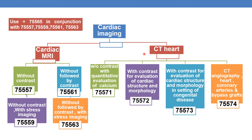Coming to cardiac CT: when cardiac imaging is done via computed tomography without contrast with quantitative evaluation of calcium, the code is 75571. When cardiac imaging is done via cardiac CT with contrast for evaluation of cardiac structure and morphology, the code is 75572. When CT is done without contrast for evaluation of cardiac structure and morphology in the setting of congenital disease, the code is 75573. The code for CT angiography of the heart, coronary arteries, or bypass grafts is 75574.